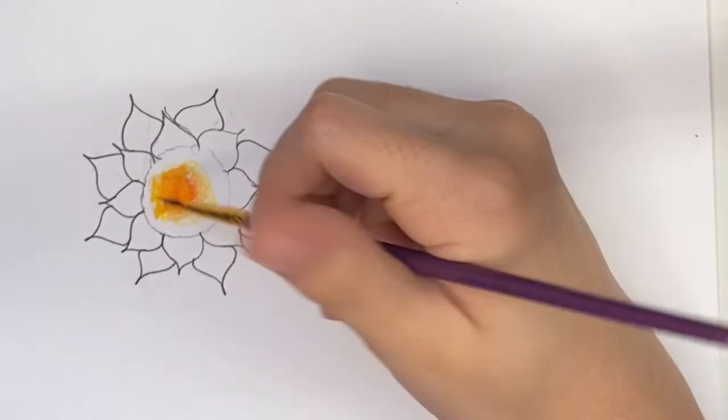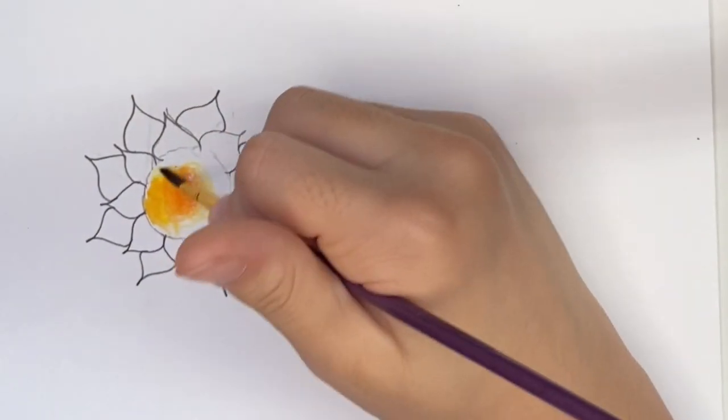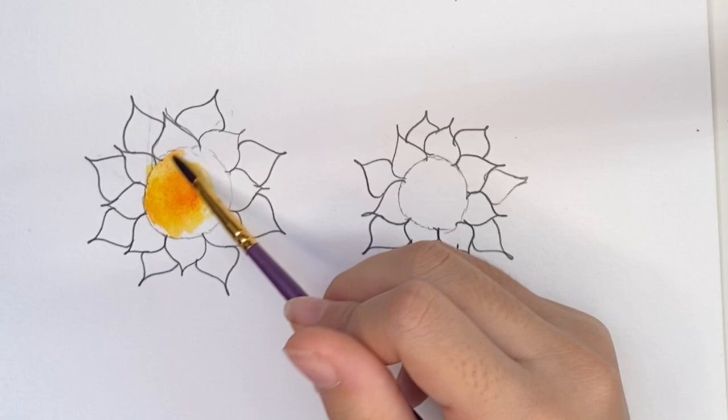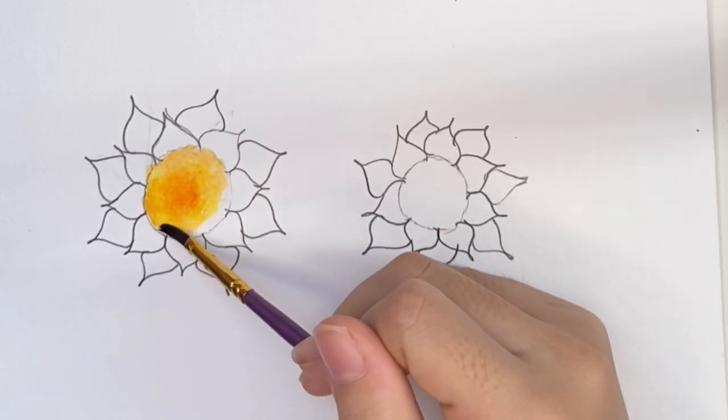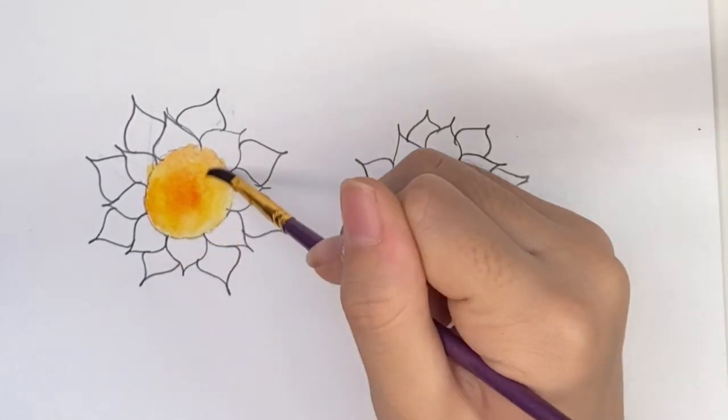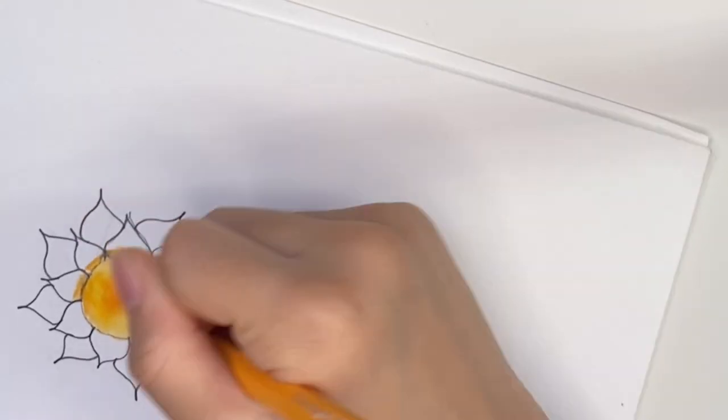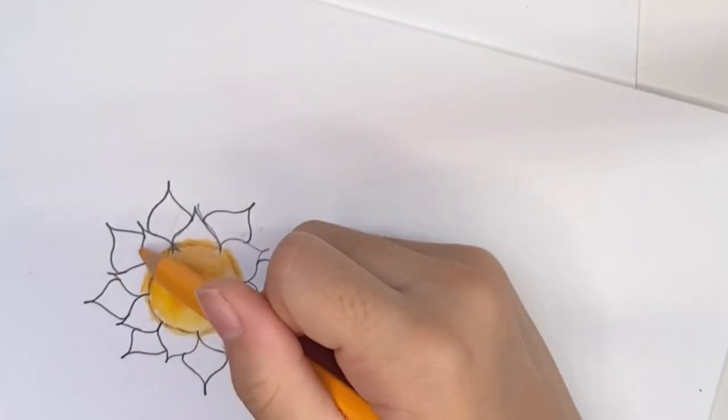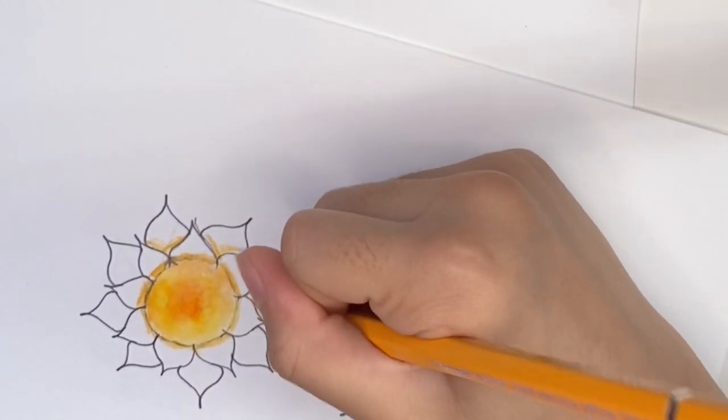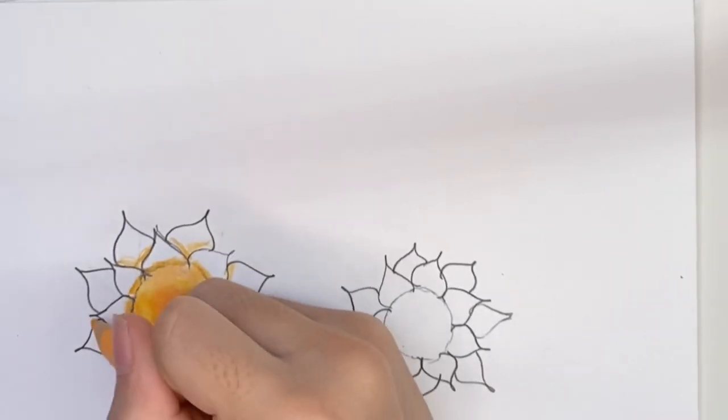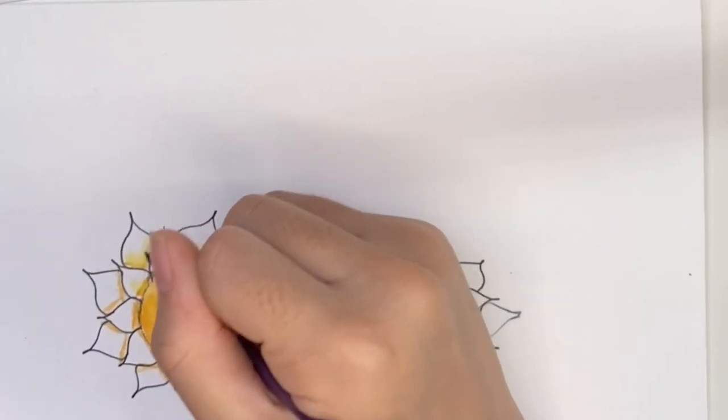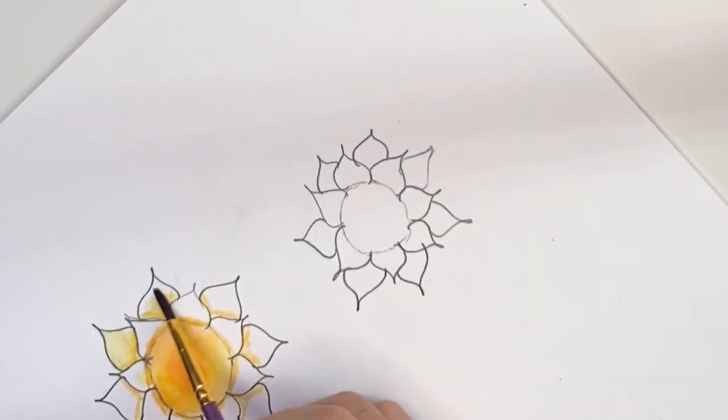So now I'm just gonna add a little bit of color to every single petal on the flower and I hope I will get the effect I wanted. Let's blend it with some water. You can see it is getting from dark to light and that is what I wanted. Yay!